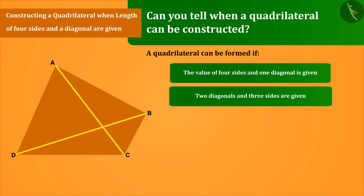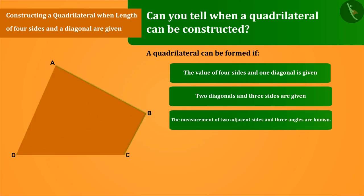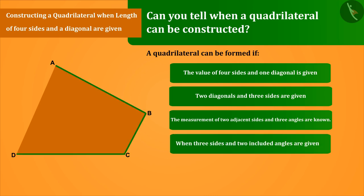Two diagonals and three sides are given. The measurement of two adjacent sides and three angles are known. The measurement of three sides and two included angles is given.